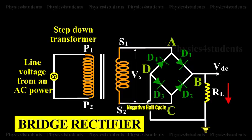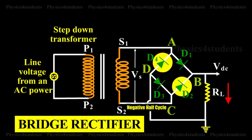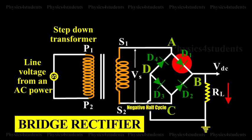During negative half cycle, the point C is positive with respect to A. The diodes D2 and D4 are forward biased and conduct, whereas the diodes D1 and D3 are reverse biased and they do not conduct. Hence, current flows along S2, C, B, D,